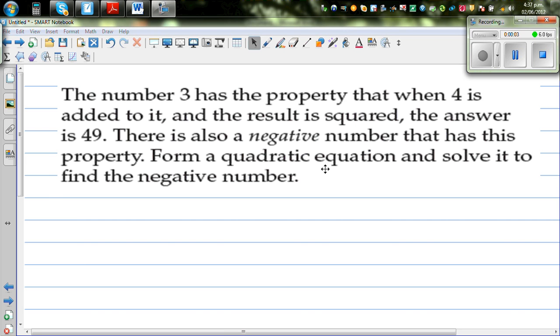The number 3 has the property that when 4 is added to it, and the result is squared, the answer is 49. There is also a negative number that has the same property. Form a quadratic equation and solve it to find the negative number.